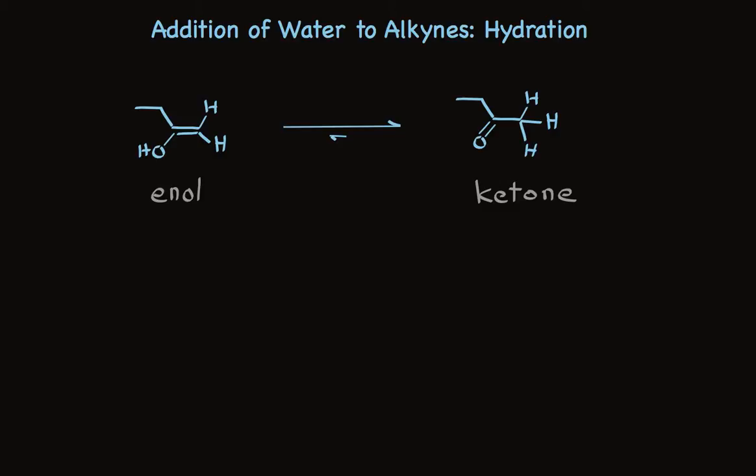The equilibrium I'm talking about converts an enol, like I've shown on the left, into a ketone. Although it's an equilibrium, the equilibrium vastly favors the carbonyl compound, the ketone in this case. A hydrogen is removed from this oxygen, and a hydrogen is added to this carbon. The process of converting an enol to a ketone is known as tautomerization. And because in this case the equilibrium involves a ketone and an enol, it's called keto-enol tautomerization.